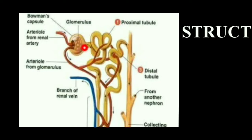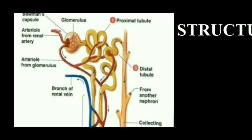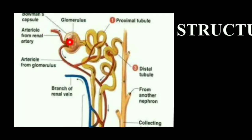Inside the Bowman's capsule we can see a bunch of blood capillaries called glomerulus. This glomerulus is formed by the branches of the wider afferent renal arteriole, which supplies blood to the nephron. From the glomerulus, the narrow efferent renal arteriole comes out. Blood enters the glomerulus through the afferent arteriole, which twists inside the Bowman's capsule and leaves as the efferent arteriole. This network of blood capillaries found inside the Bowman's capsule is called glomerulus.